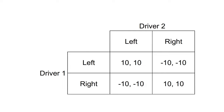Consider the following game between two players deciding what side of the road to drive on. They can drive on the left or the right. If they both drive on the left or right when they approach each other, they'll successfully pass. If one drives on the left and the other on the right, they will crash.